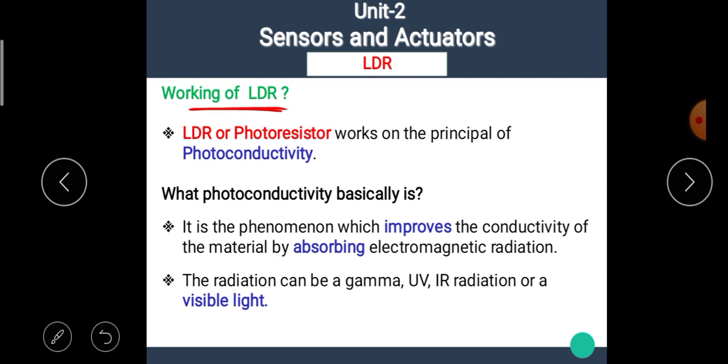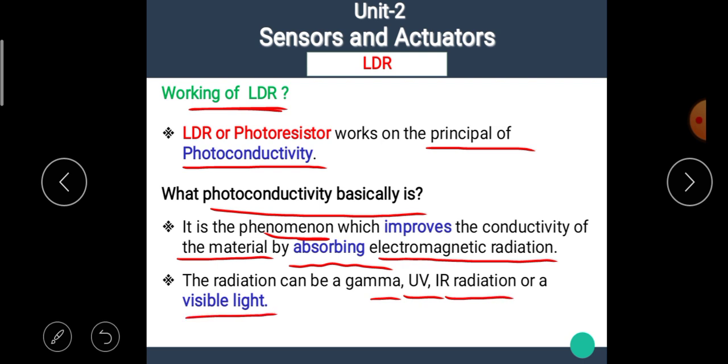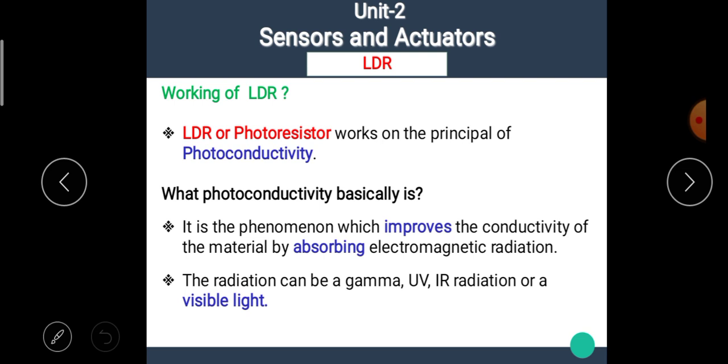The LDR or photo resistor works on the principle of photo conductivity. Then the question arises here, what photo conductivity basically is? The photo conductivity is the phenomenon which improves the conductivity of a material by absorbing electromagnetic radiation. The radiation can be gamma, ultraviolet, infrared radiation or visible light. That means in photo conductivity, when the radiation incidents on a photo sensitive material, the radiations like gamma rays, ultraviolet rays, infrared radiation or visible light, then the conductivity of material changes.